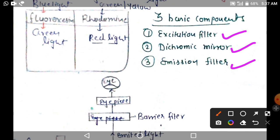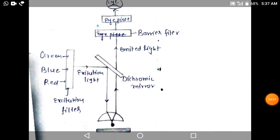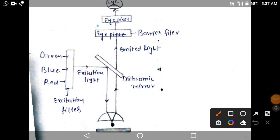Let's see the ray diagram. This is a ray diagram of fluorescence microscopy. The light source provides green, blue, or red light which passes through the excitation filter. The excitation filter is such a filter that will pass specific light.